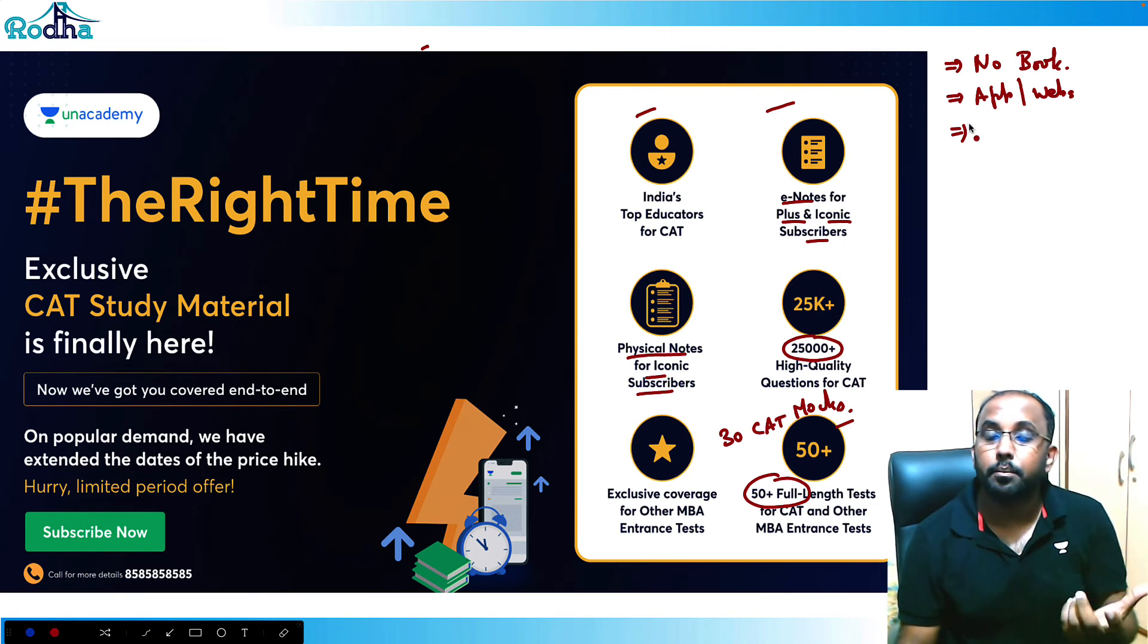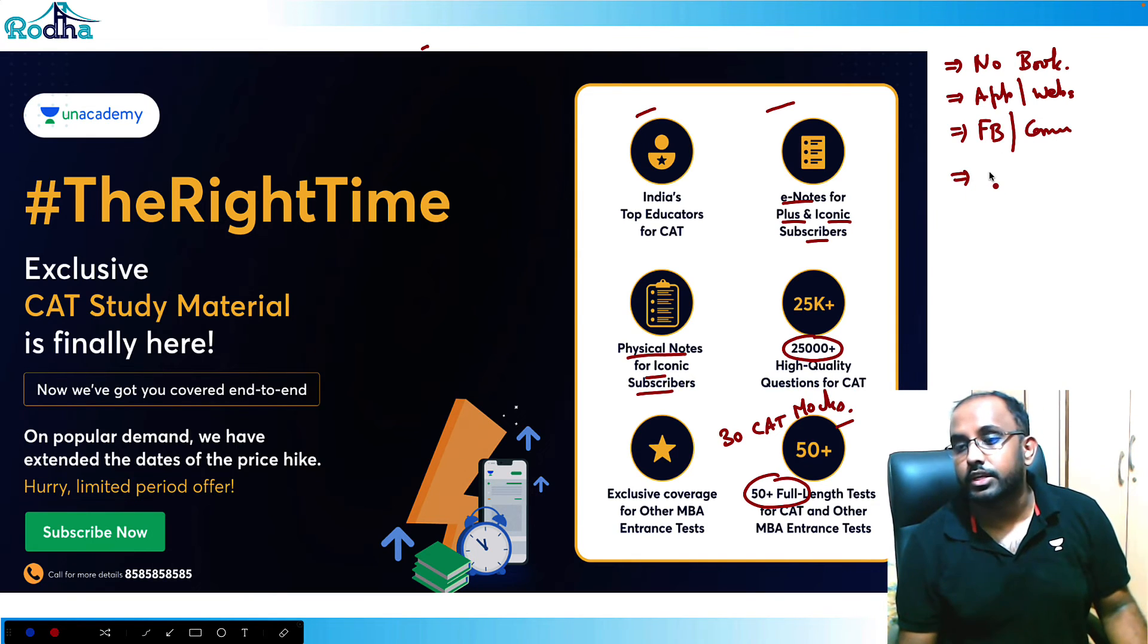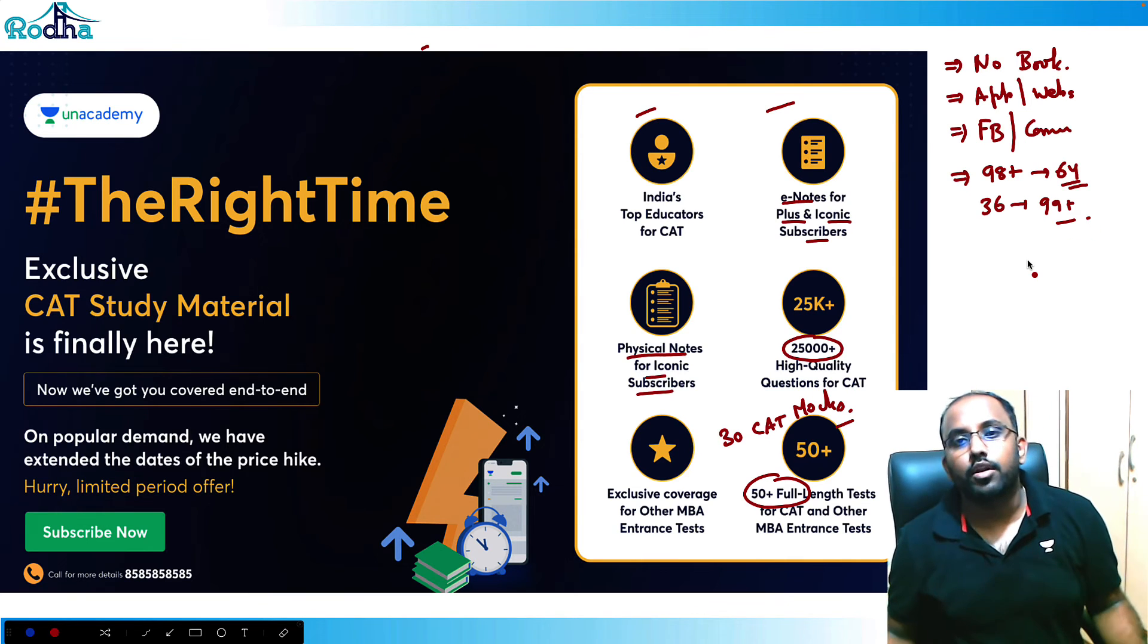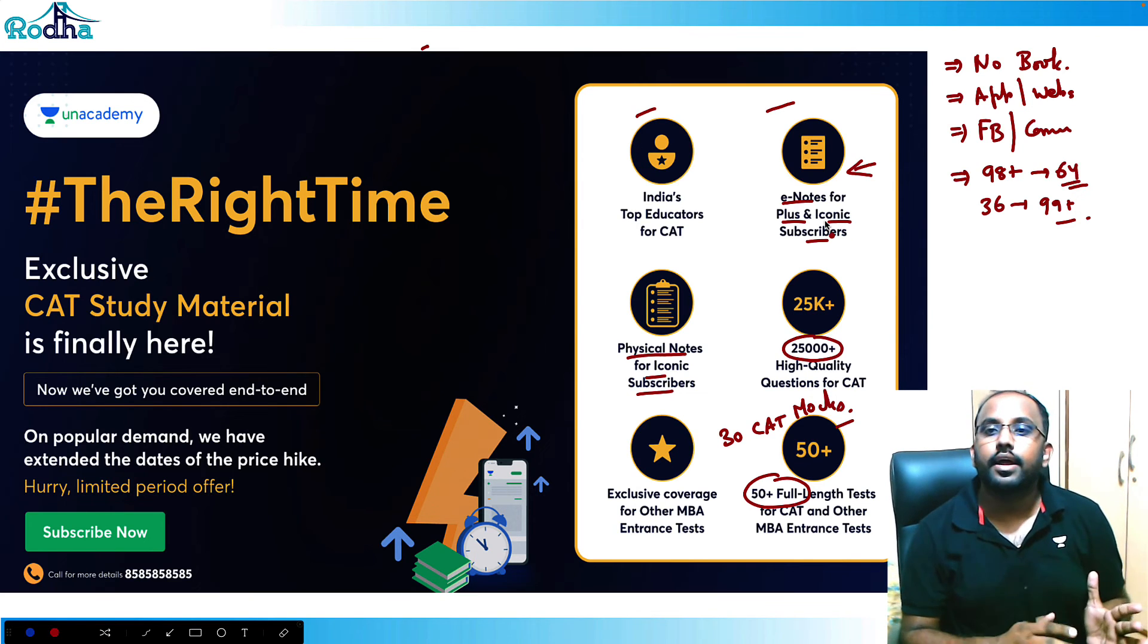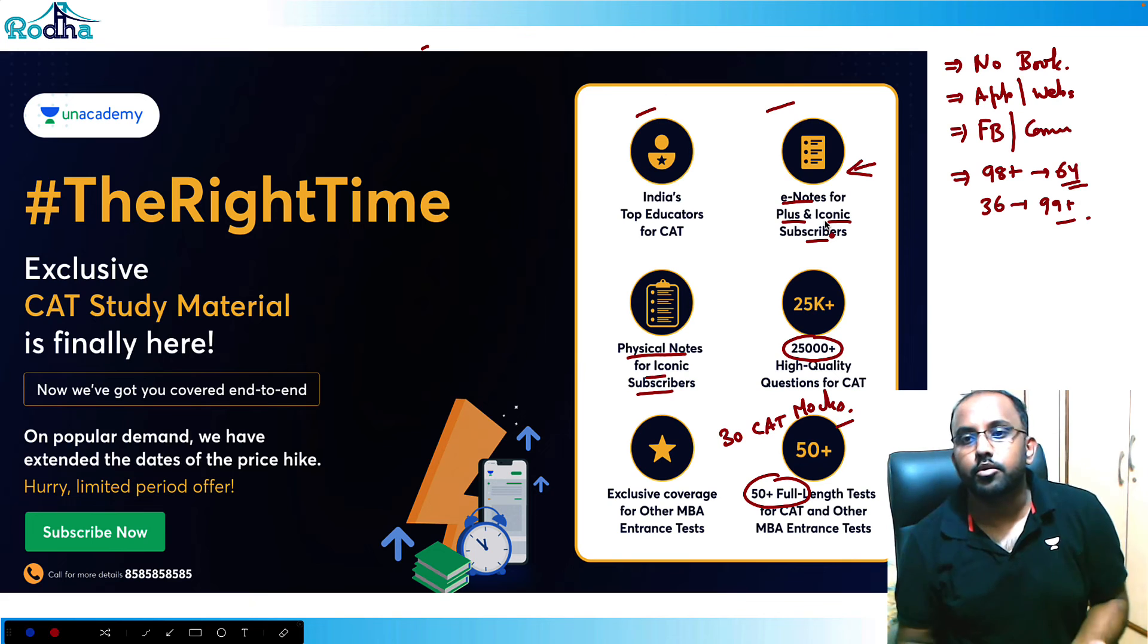The students' feedback on my Facebook groups, on community posts, on Rodha - so around 96, 98 plus percentile, around 64 people have scored 90, 90 plus percentile. Out of that, around 36 people have got 99 plus percentile. So there are some in IIM-A, there are four students going this year. In IIM-B, already seven are studying, four more are going. So all these great results, we are putting a lot of effort. So if you feel that your preparation is not on the right track and you need good guidance, good mentorship, you can join this.